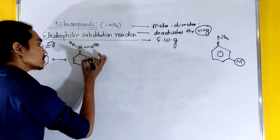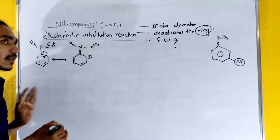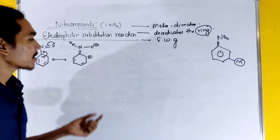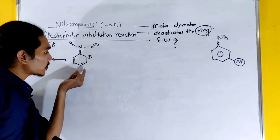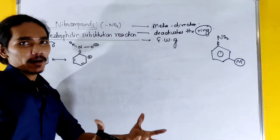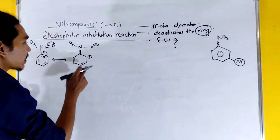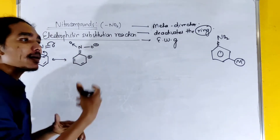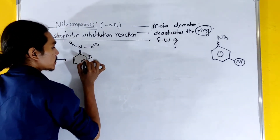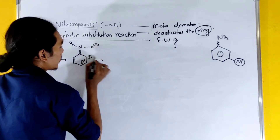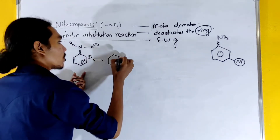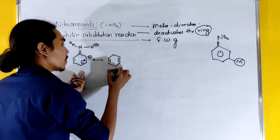Now let's take a look. There is a positive charge at the ortho and para positions. At meta-positions, the electron density is comparatively higher. So the incoming electrophile attacks the meta-position. This is the plus charge here.